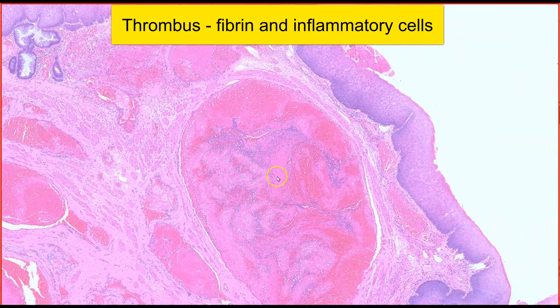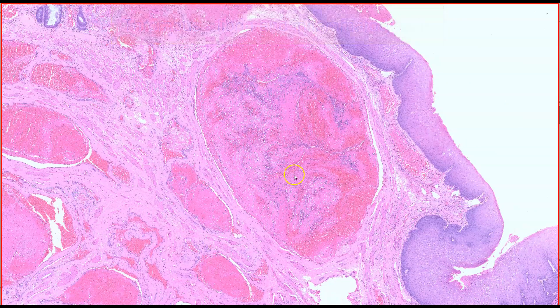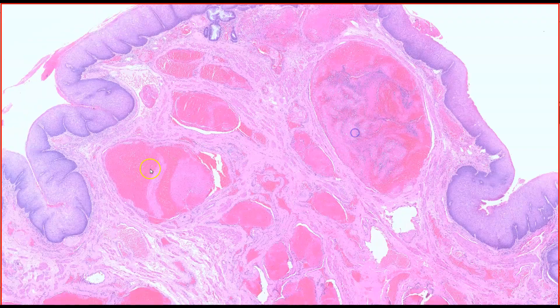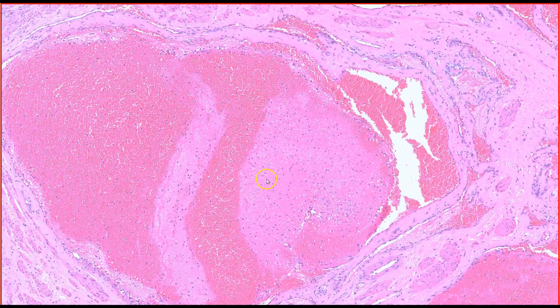Hence, these are thrombosed hemorrhoids. Usually, when there is thrombosis within hemorrhoids, the patient will experience pain. In this vessel, we can see the fibrin and inflammatory cells as evidence of thrombus formation.